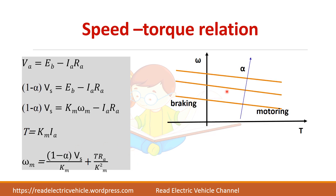We can plot the speed-torque characteristics. You can see braking in the second quadrant gives characteristics like this — the first quadrant represents motoring mode operation, and the second quadrant represents braking mode operation.